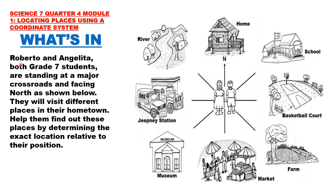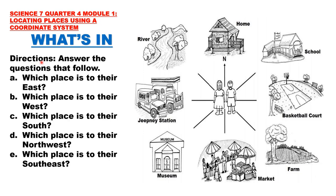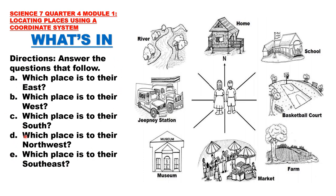What's In: Roberto and Angelita, both Grade 7 students, are standing at a major crossroads and facing north. They will visit different places in their hometown. Help them find out these places by determining the exact location relative to their position. Answer the following questions: A. Which place is to their east? B. Which place is to their west? C. Which place is to their south? D. Which place is to their northwest? And E. Which place is to their southeast? To answer these five questions, let us first recall the major directions and the secondary directions.